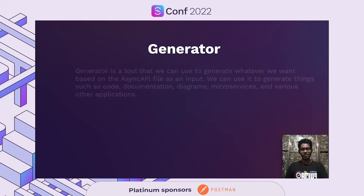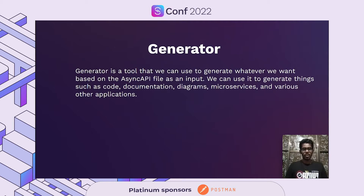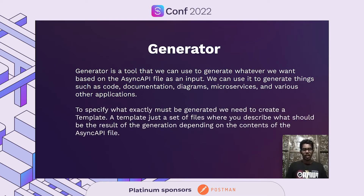What is Generator? Generator is a tool that we can use to generate whatever we want based on the Async API file as an input. We can use it to generate things such as code, documentation, diagrams, microservices, and various other applications. As long as you can define it in your Async API file, there is no limit to what Generator can generate. To specify what exactly must be generated, we need to create a template. A template is just a set of files where you describe what the result of the generation process should be, depending on the contents of the Async API file provided.